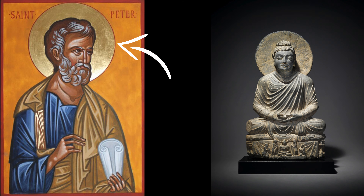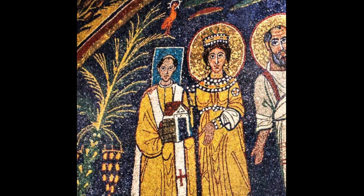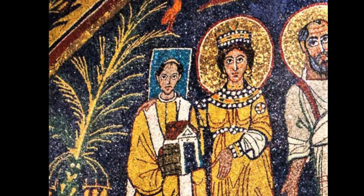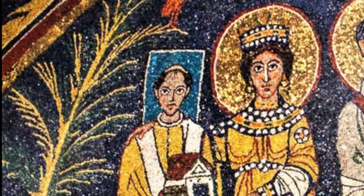Sometimes halos look like this: a flat, circular shape behind the head of an angel, saint, or religious figure. Other times, halos look more like this — a bit more of a three-dimensional type halo, and the disc is turned downward, and it usually glows. Yet other times, halos feature rays, like those on the Statue of Liberty and on this ancient Greek coin of Ptolemy III. Although less common, some halos are squares, like this picture of Pope Pascal I.